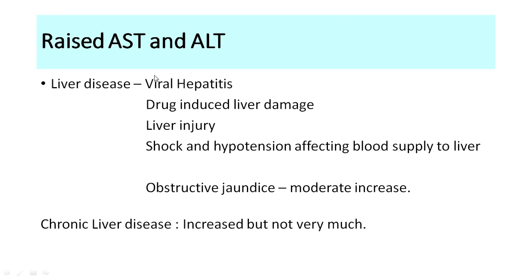Conditions where both AST and ALT are raised include: liver disease — most commonly viral hepatitis (A, B, C, D); drug-induced liver disease such as anti-tuberculosis or cancer drugs. Enzyme levels rise even when bilirubin is normal, indicating early liver disease. Any liver injury following surgery, or shock causing reduced blood supply to the liver, will also raise these enzymes. In obstructive jaundice, alkaline phosphatase is the major enzyme raised, but a moderate increase in AST and ALT also occurs.